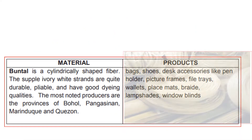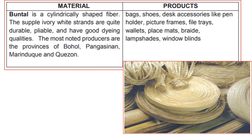Another material is buntal, a cylindrically shaped fiber. Its soft, ivory-white strands are quite durable, tieable, and have good dyeing qualities. The most noted producers are the provinces of Bohol, Pangasinan, Marinduque, and Quezon. Products include bags, shoes, desk accessories like pen holders, picture frames, file trays, wallets, placemats, braids, lampshades, and window blinds.